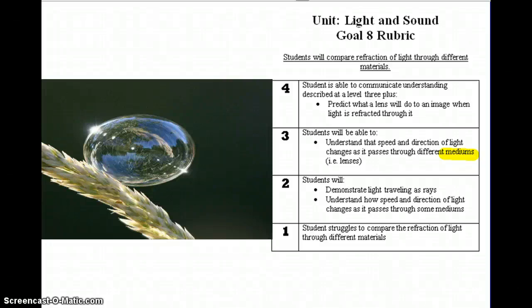Hey, hey, what's happening Webster Groves? This is Wave Energy Goal 8 video notes. What we're looking at in this goal is that we are going to be able to understand that speed and direction of light changes as it passes through different mediums. Mediums, we know that word. Oh, I hope you remember it. But this time we're talking about lenses.